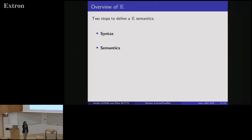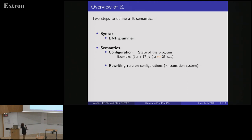K is useful to define semantics. The first step is to define the syntax using a BNF grammar, and after that you define semantics under this syntax using a configuration, which is just a state of the program. Here is an example with two cells: the first one is named K and contains the current program, and the second cell is named F for environment, saying that variable X has value 25.